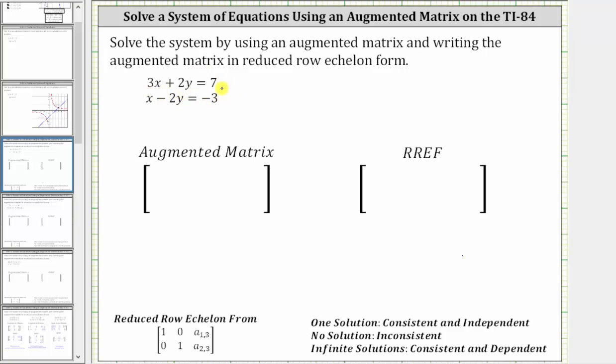Using the first equation to form the first row of the augmented matrix, the first row will be three, the coefficient of x, two, the coefficient of y, and seven, the constant on the right. So the first row is three, two, seven.